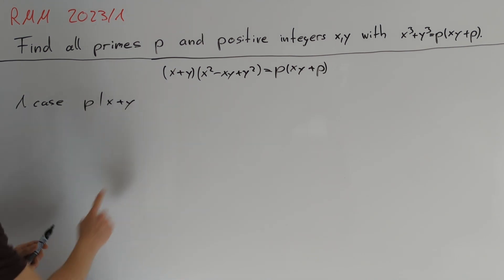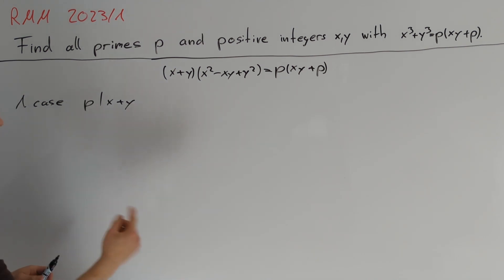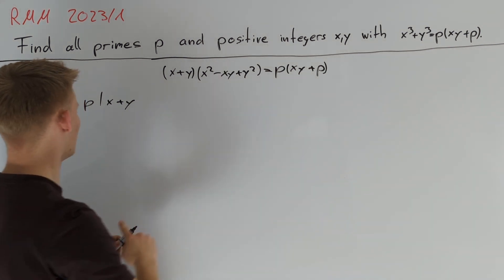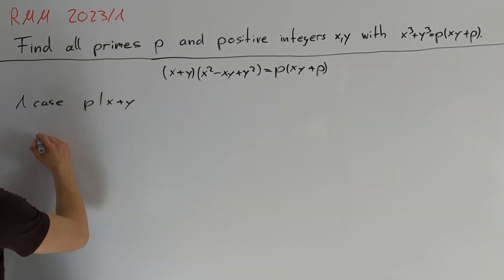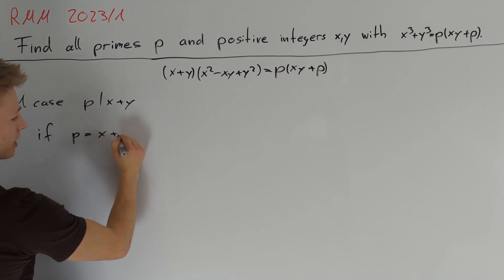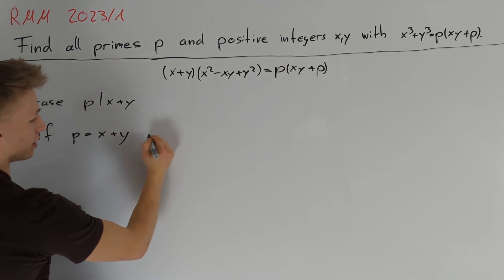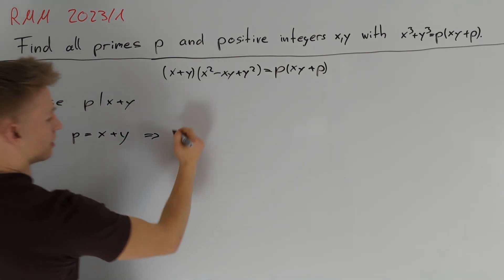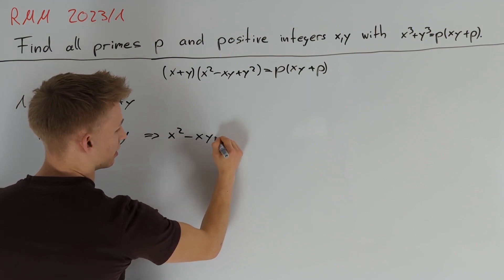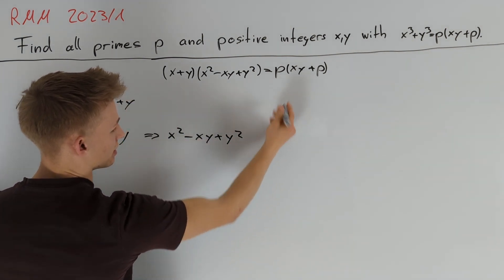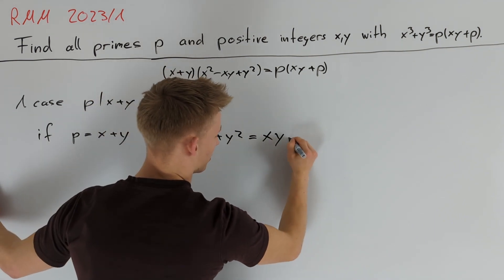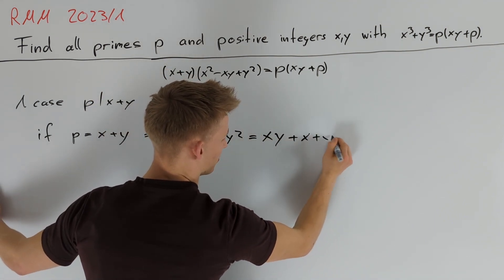If p = x + y, we get a nice equation because the (x + y) term cancels on both sides. The left-hand side becomes x² - xy + y², and the right-hand side is xy + x + y.